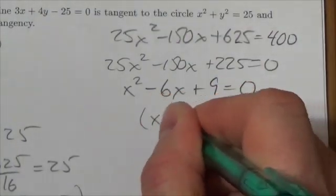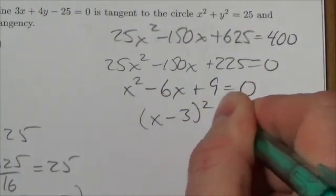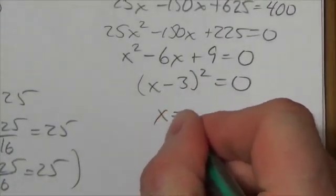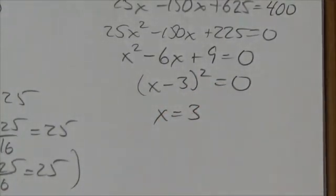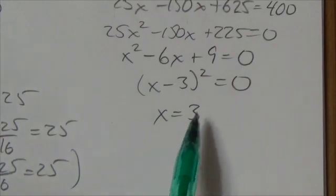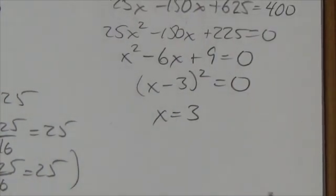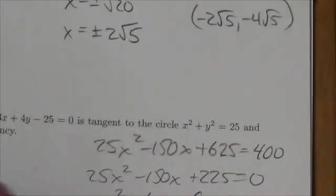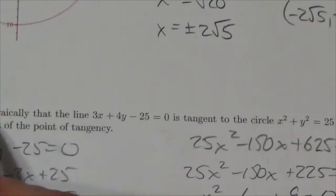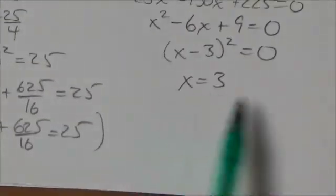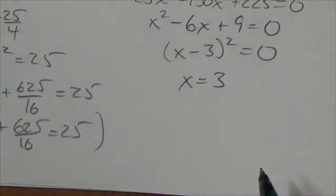And when I solve that or factor it, it's going to become x minus 3 squared, which means that my only solution here is x equals 3. Now that right there verifies that this is in fact a tangent. It says here, demonstrate algebraically that the line is tangent to the circle. Well, I'm seeing that I'm only getting one solution for x here. Okay, now the question still asks me to solve for the point of tangency.